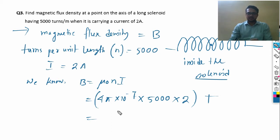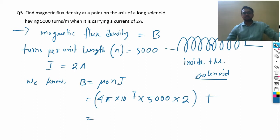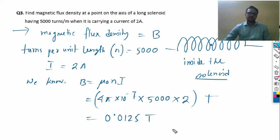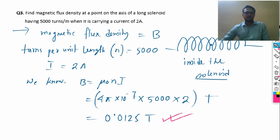Calculating: 4 × π × 10⁻⁷ × 5000 × 2 = 0.0125 tesla. So the correct answer is 0.0125 T. No need to write much — solve it directly like this.